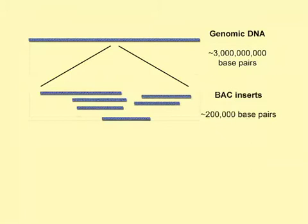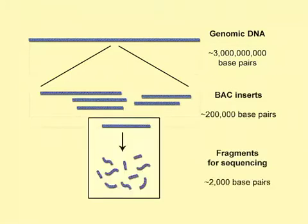and a BAC is still too large for a sequencing machine to handle. So, each BAC must be broken down again into smaller pieces of about 2,000 base pairs.